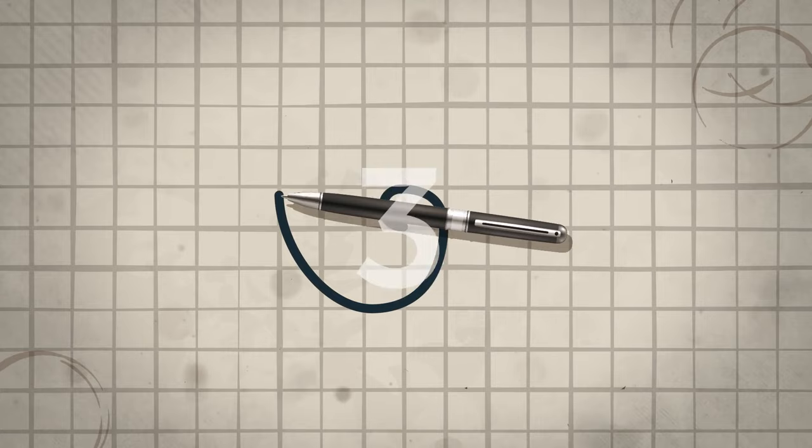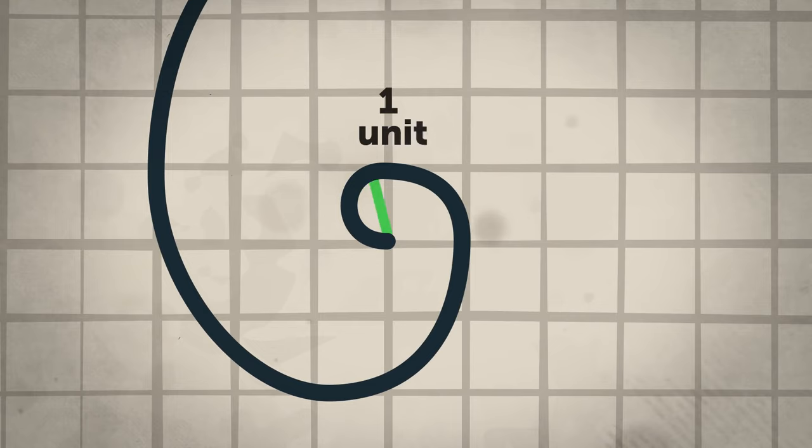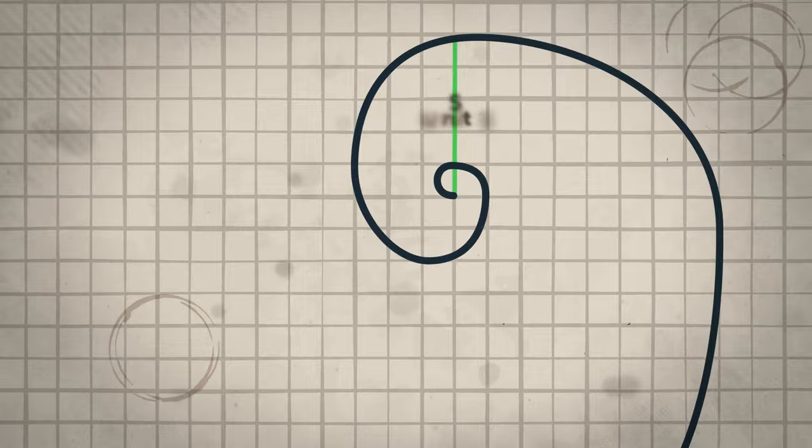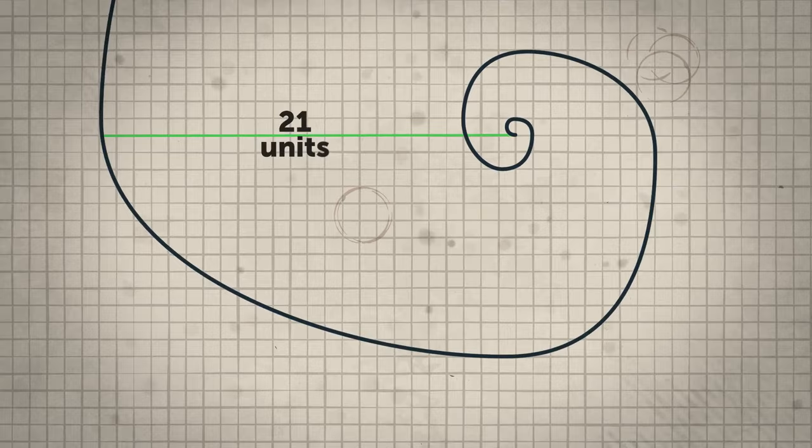Start with a small circle at the center of your page, then draw larger circles around it without lifting the pen from the paper. The first circle is zero units wide, the second is one unit wide, the third is one unit wide, and so on. As you keep adding more circles, they fit together perfectly to form a spiral shape that gets bigger and bigger, always following the same pattern based on the Fibonacci sequence.